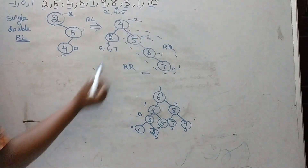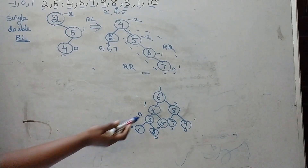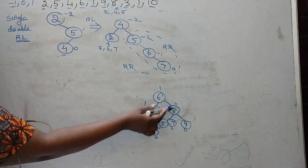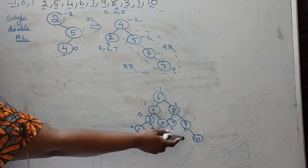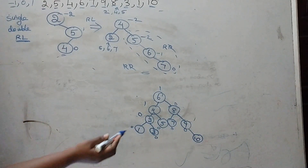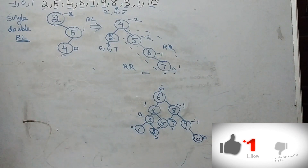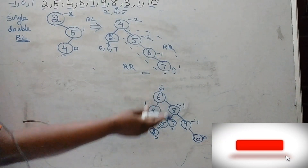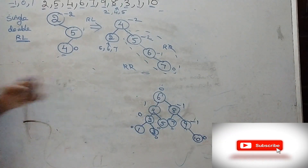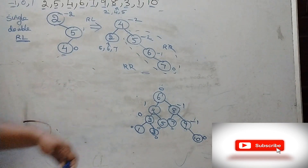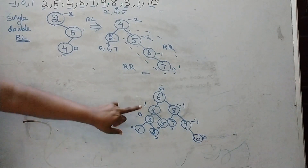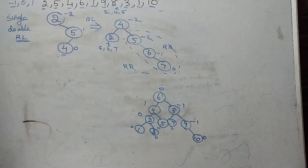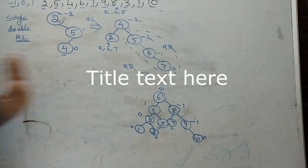Now we insert the last element, 10. 10 is greater than 6, greater than 8, greater than 9, so place 10 as the right child of 9. After insertion, we find the balance factor values. All nodes have balance factor values of 0, 1, or minus 1 only. This is the final balanced AVL tree after inserting all elements.